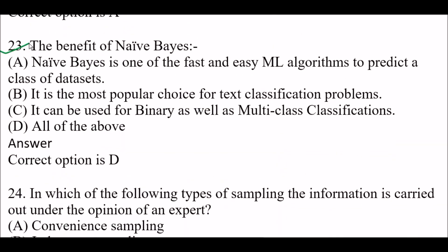Next question: The benefits of Naive Bayes — Option A: It is one of the fast and easy ML algorithms to predict a class of dataset, Option B: Most popular choice for text classification problems, Option C: Used for binary as well as multi-class classification, Option D: All of the above. Right answer is Option D — all of the above. They are all benefits of Naive Bayes.